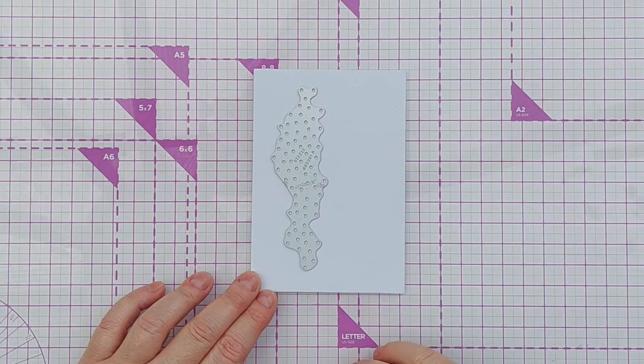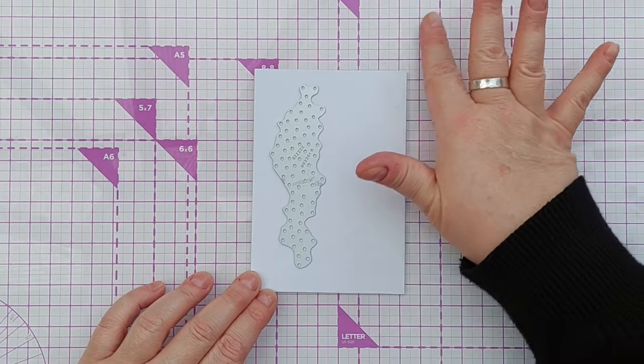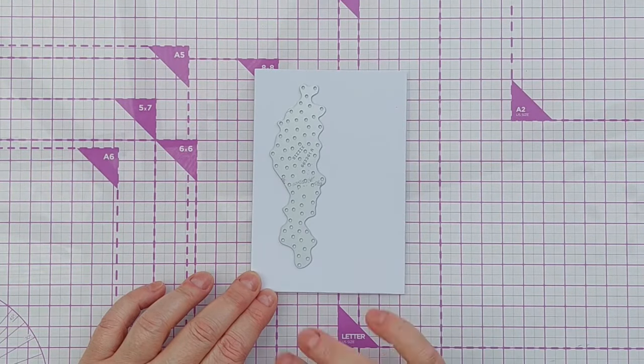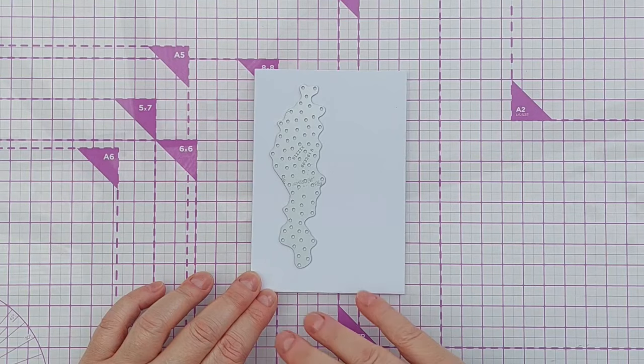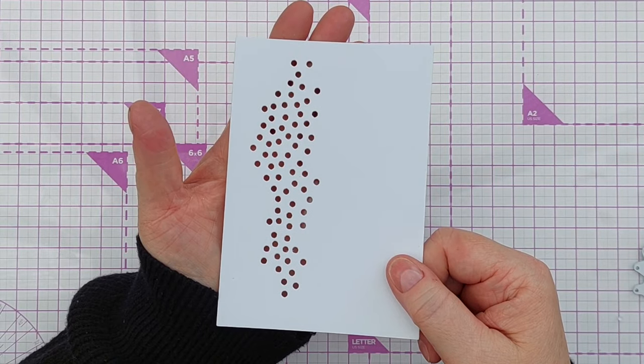So this is going to be an aperture card. I want that about there towards the left hand side because I want this to stay mostly empty so the card is clean and simple. So there we go, we've got lots of little holes in the front of my card.